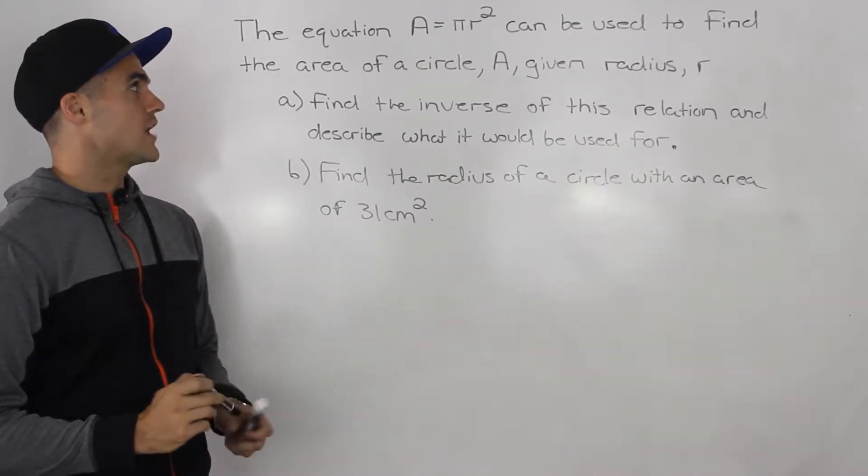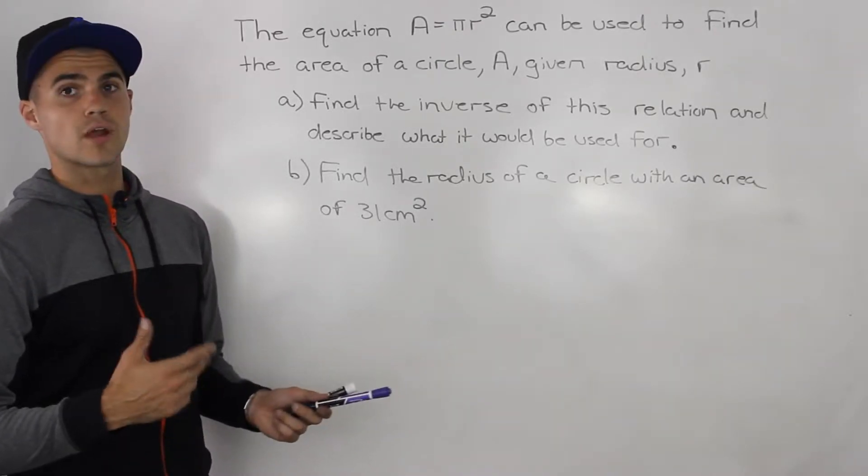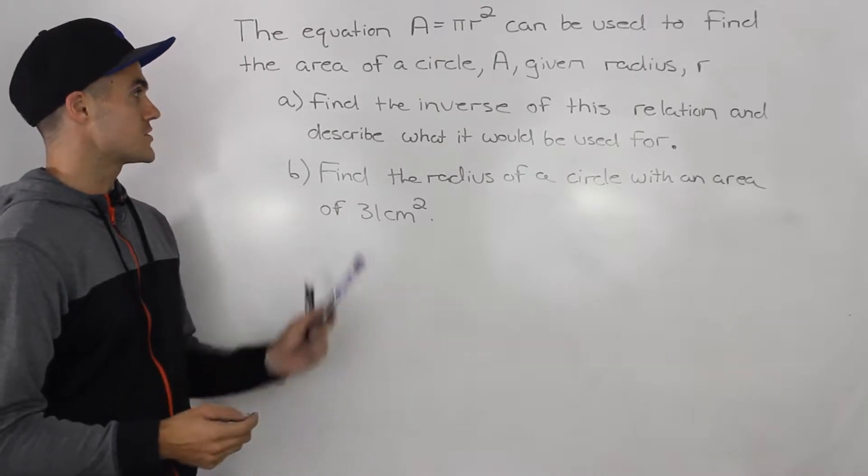So the equation A = πr² can be used to find the area of a circle A given the radius r. Two parts to this question.